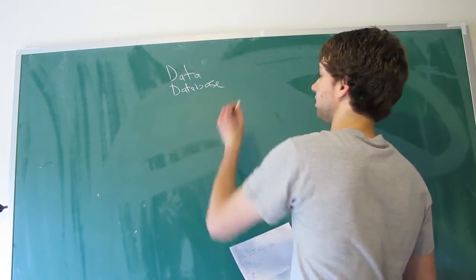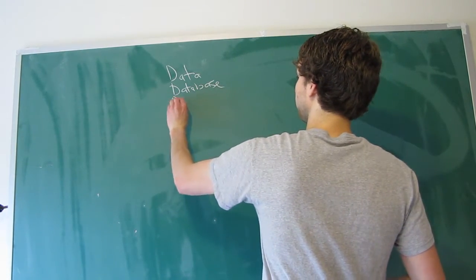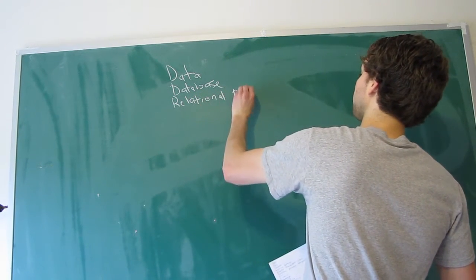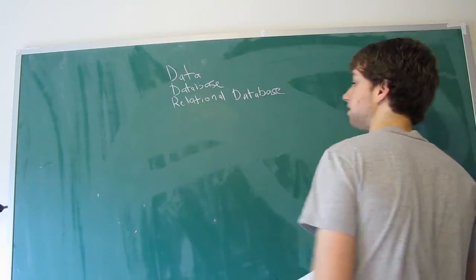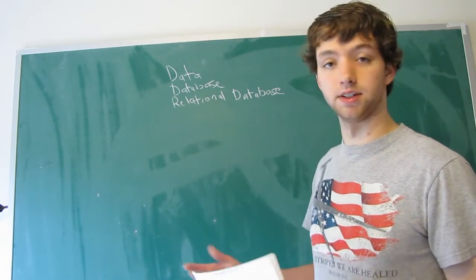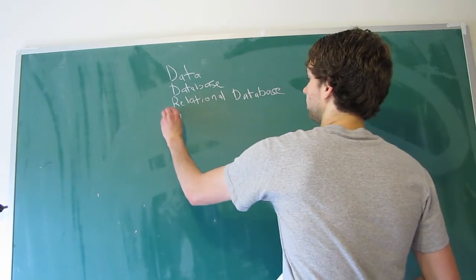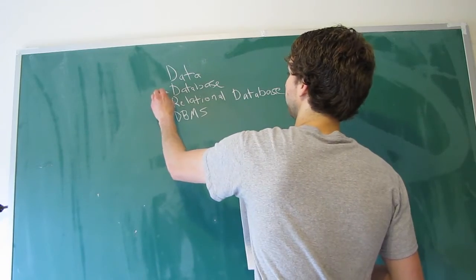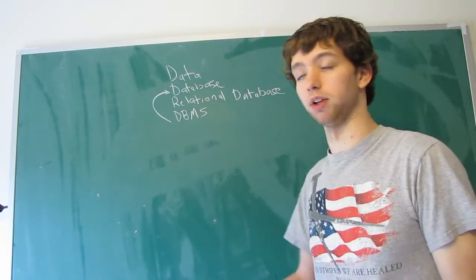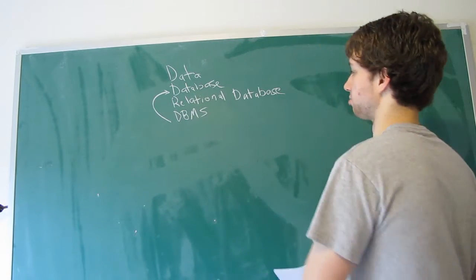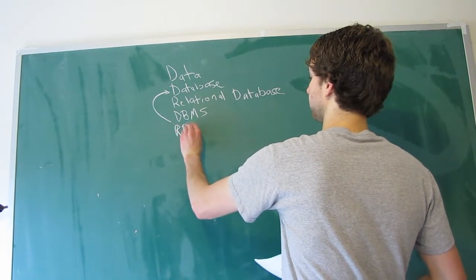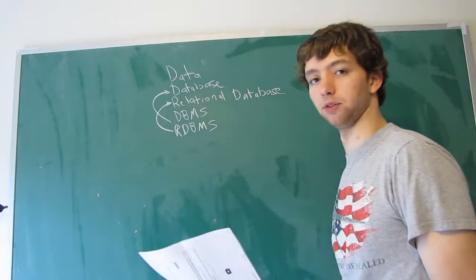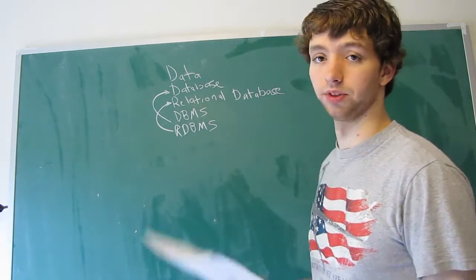And then we have a specific kind of database, which is a relational database. What's special about a relational database is that it stores things in tables. We have a database management system, or DBMS for short. That is how we manage a database using code. We have a specific kind called a relational database management system, which is used to control our tables and the values within our tables of a relational database.